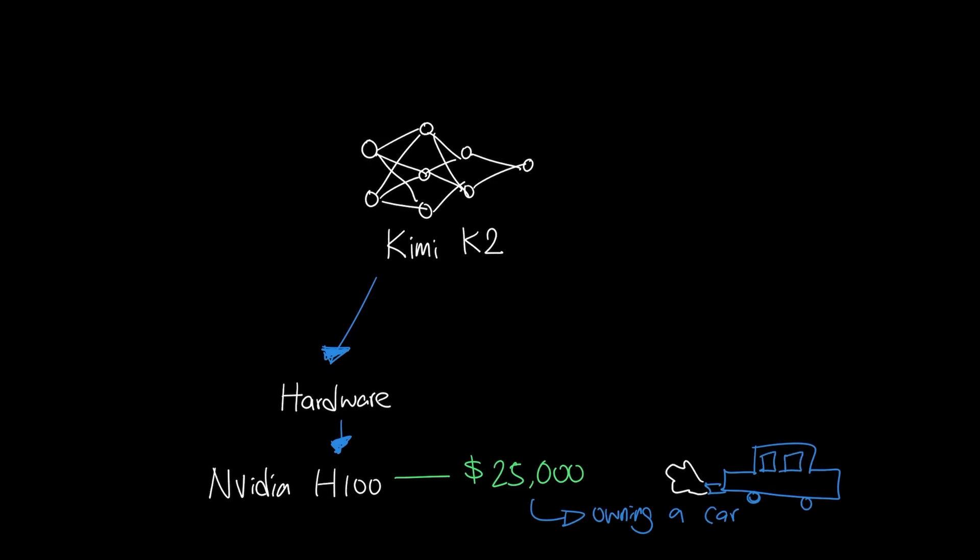And just like owning a car, you need to put gasoline to run it. The H100 can cost up to $90 per month to run it locally, spending around 0.7 kilowatts.